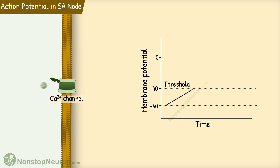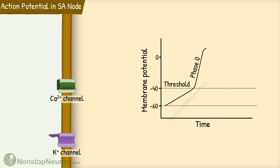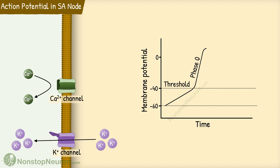At the threshold, more calcium channels open, resulting in a rapid influx of calcium. This produces the upstroke, which is also called phase 0. Then the calcium channels close and potassium channels open, so calcium influx ceases and potassium starts leaving the cell. Exit of positive ions brings the membrane potential towards electronegativity, and thus the action potential is terminated. This is phase 3.